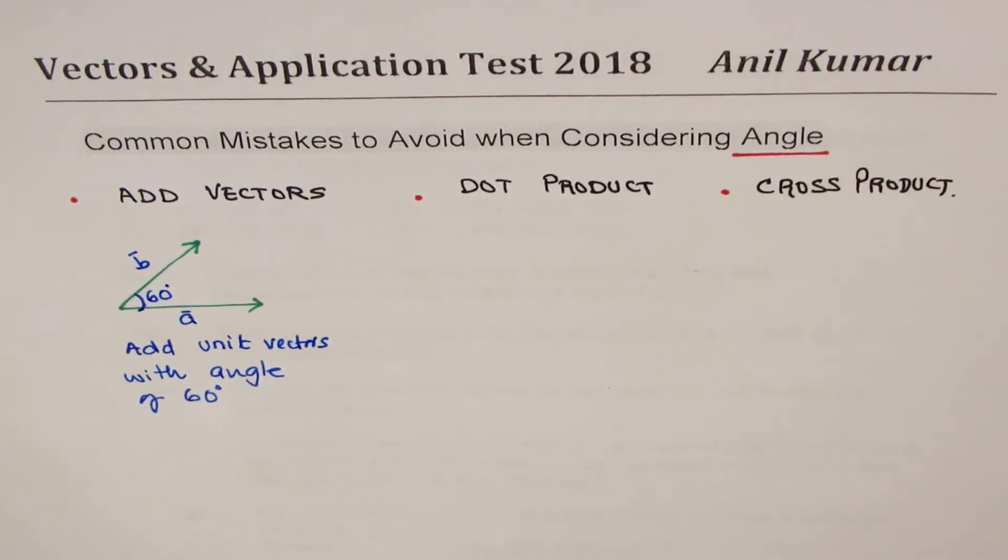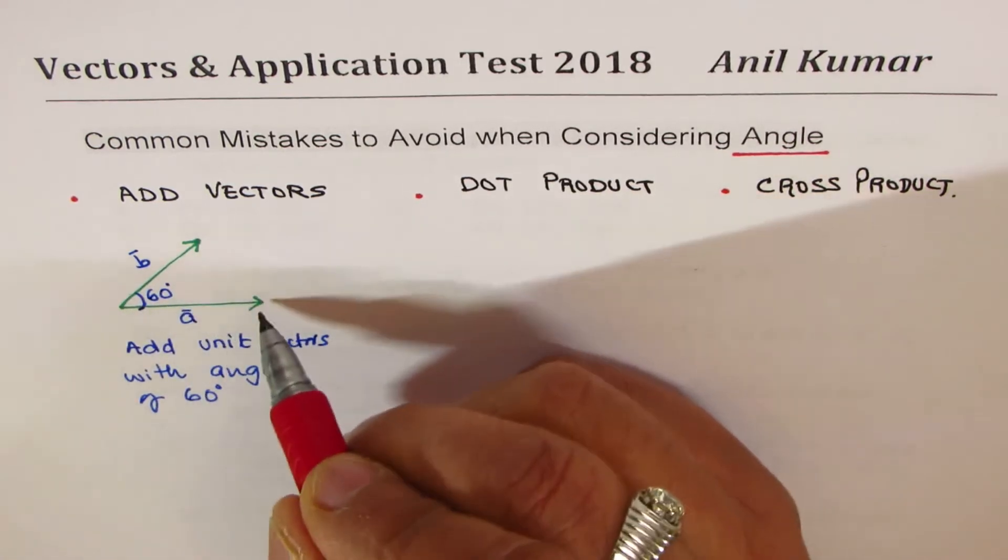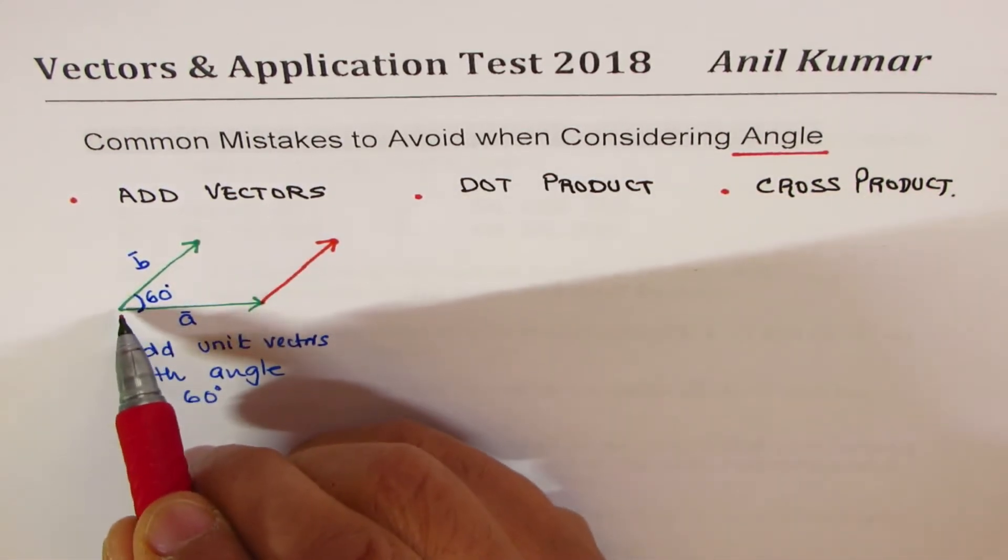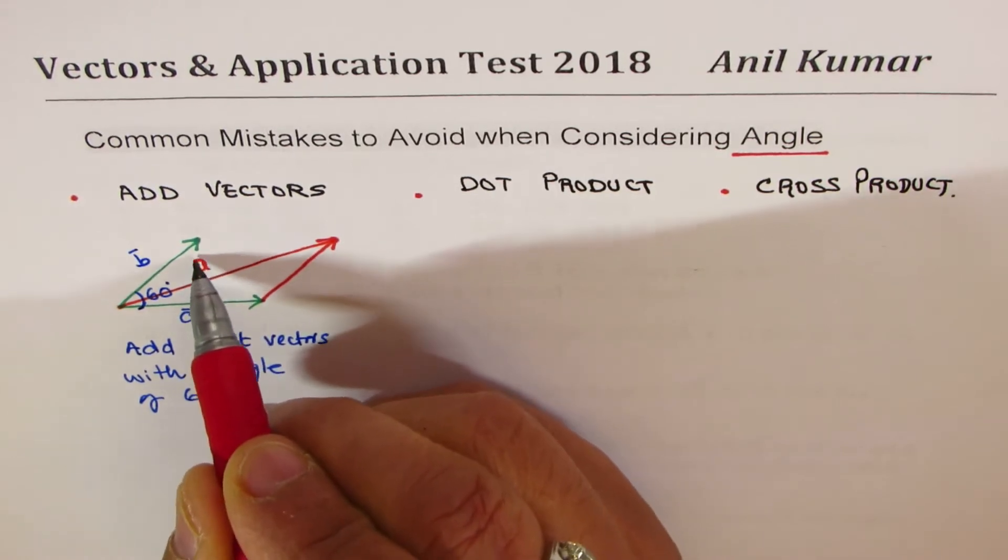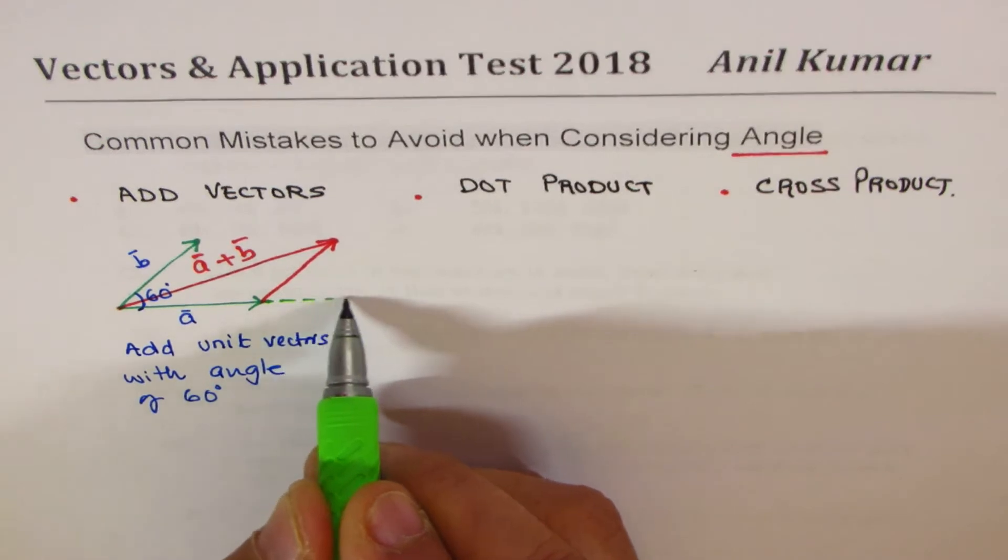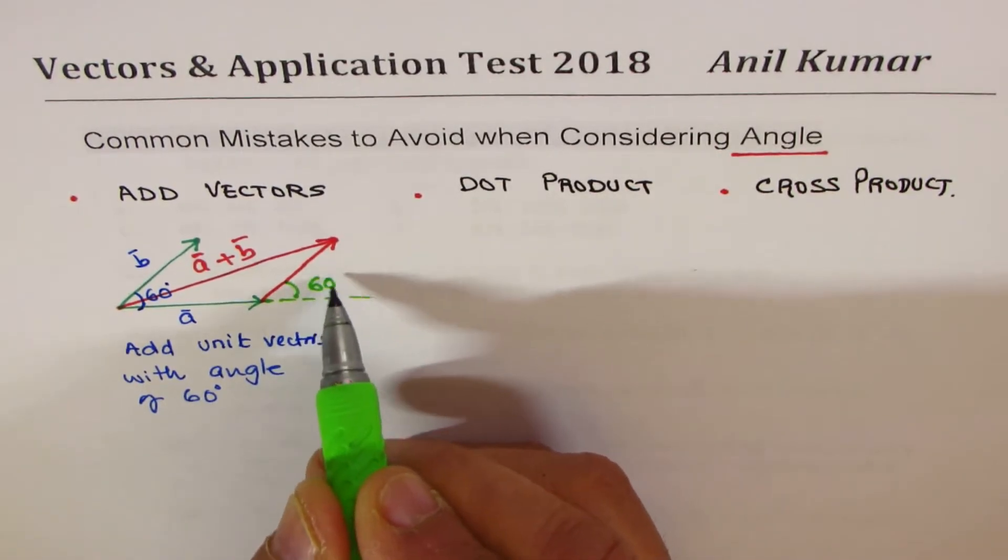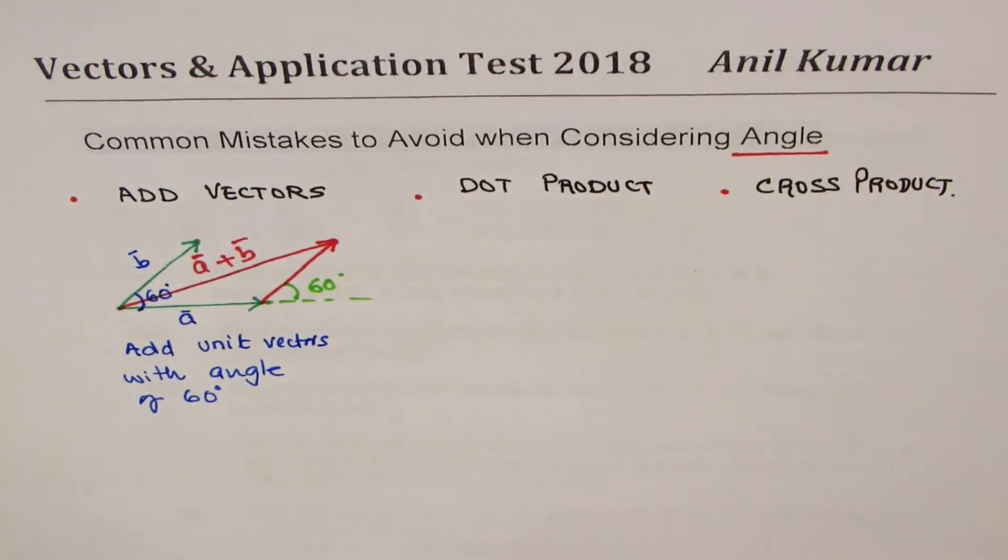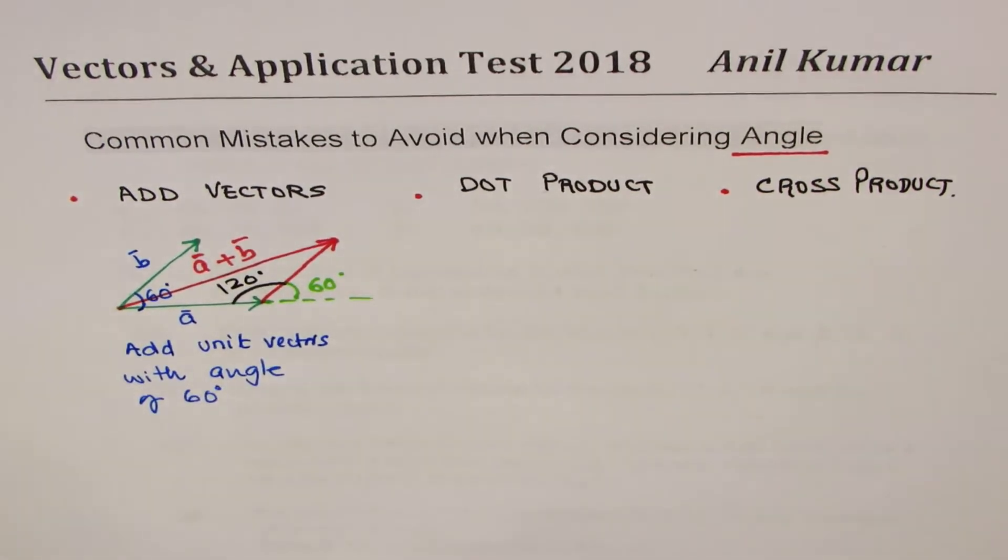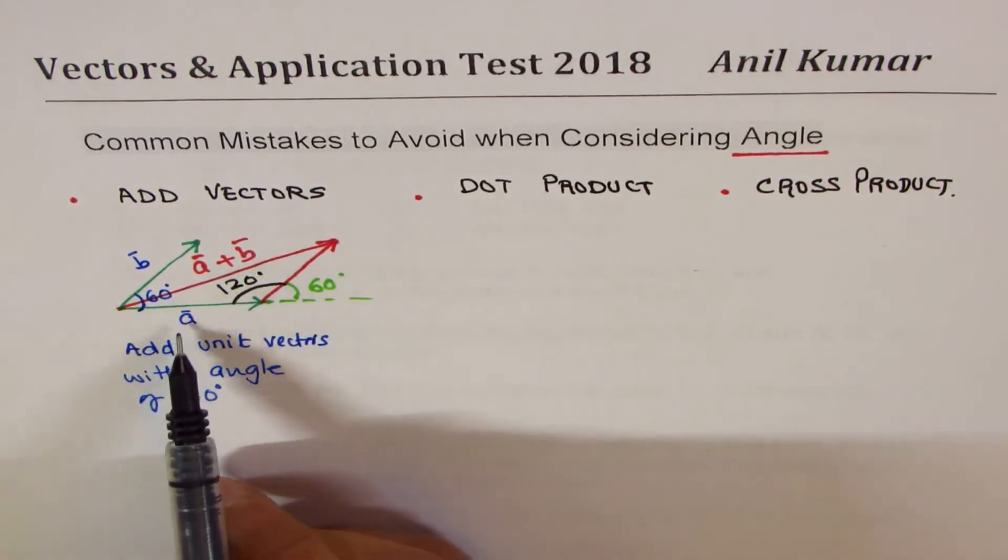Now when you add these vectors, how are you going to do it? Very simple case is that you have to actually draw the vector b, putting this tail on the head, kind of like this. And now the resultant will be kind of like this. This is vector a plus vector b. So when you add them, which angle do you take? That is what common mistake is. Is it 60 degrees? The answer is no. You have to put these vectors tail to tail. We know that is 60 degrees. However, the angle which you have to take is right there. You have to apply the cosine law, and the angle is 120 degrees. Do you understand? So that should give you the result of a plus b.